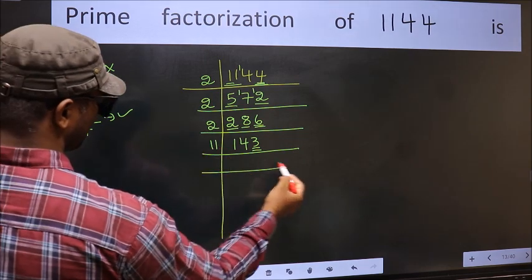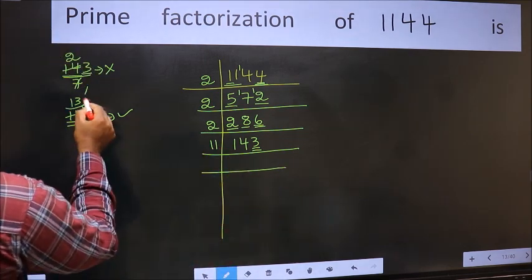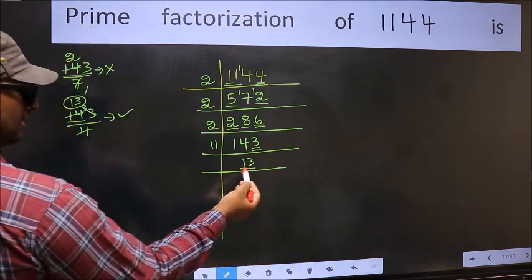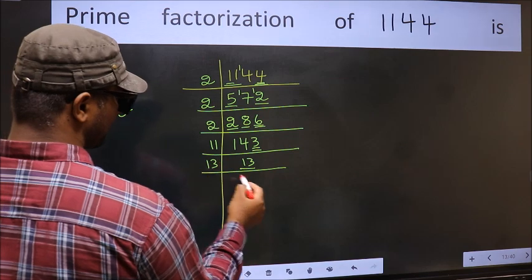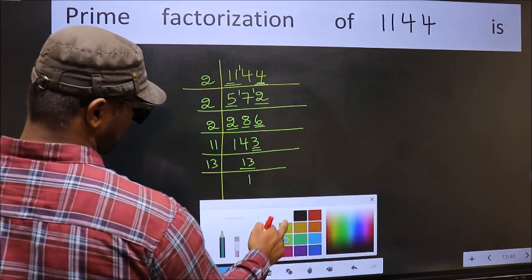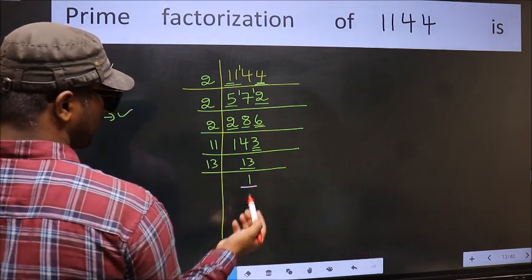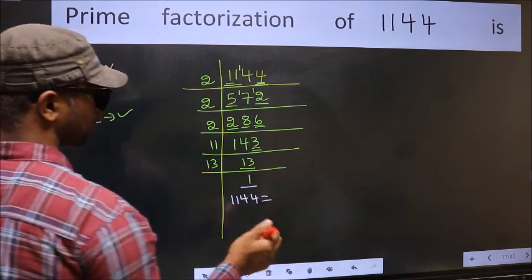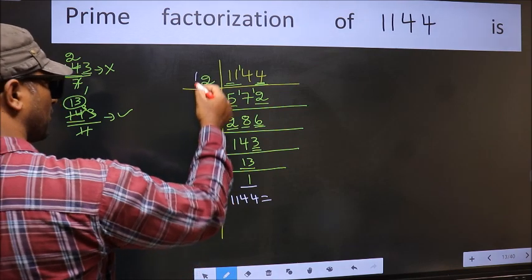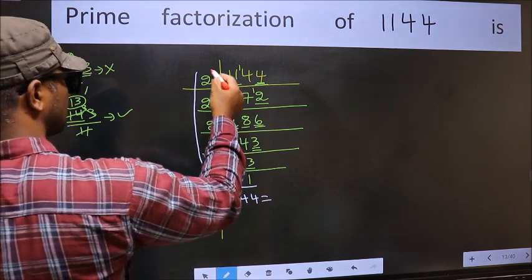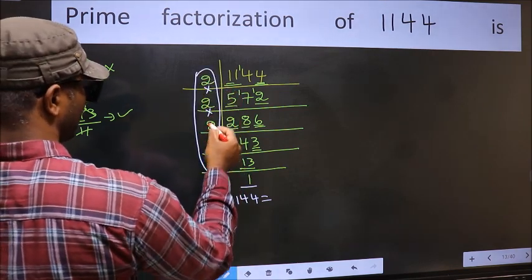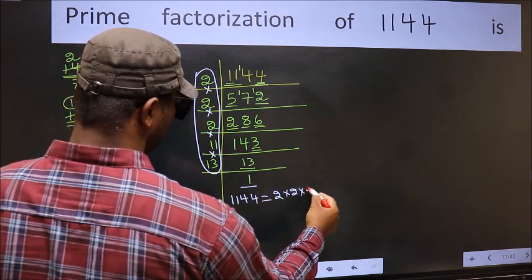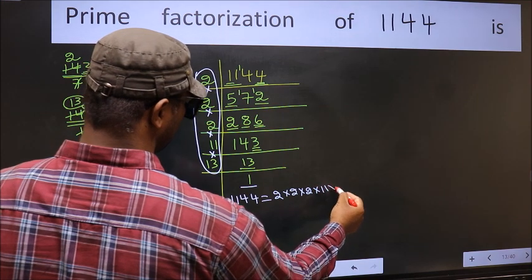So, take 11 here, and we write the other number as 13. Now we have 13. Since 13 is a prime number, 13 once 13, we get 1. So the prime factorization of 1114 is the product of these numbers: 2 × 2 × 2 × 2 × 11 × 13.